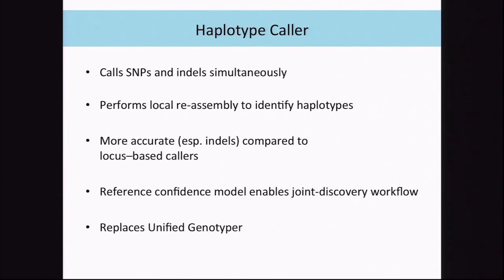We also have the reference confidence model, which Lewis touched on a little bit. The reference confidence model is what enables us to do joint discovery really fast.